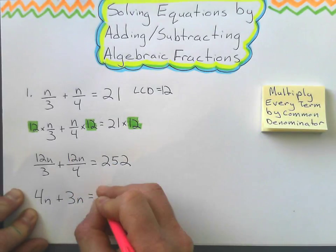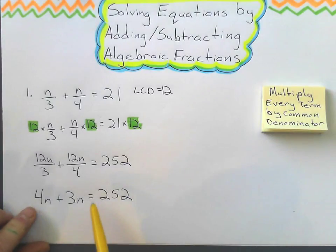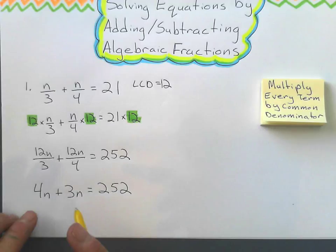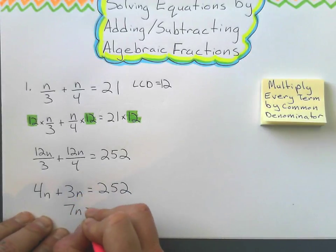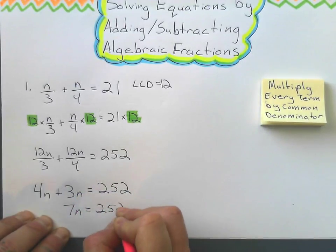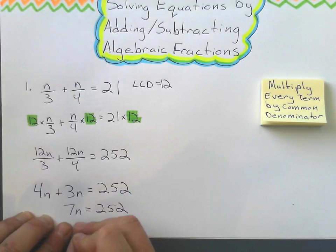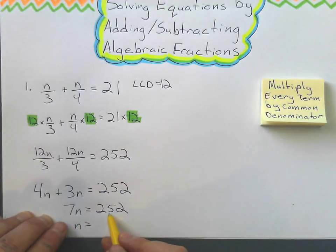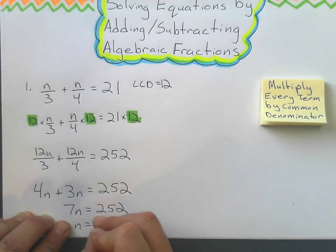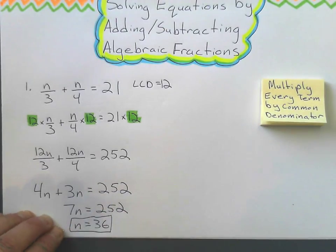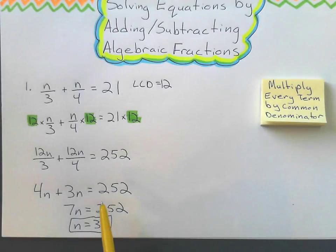And so what I get, this is my goal right here, my goal is to eliminate the fractions. Because once I have this, well, I can collect like terms, 7n equals 252, and then I just divide by 7. And 252 divided by 7 gives me 36. So once we eliminate the fractions, it becomes quite an easy equation to solve.